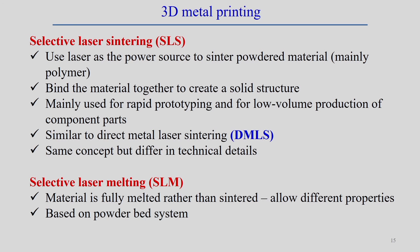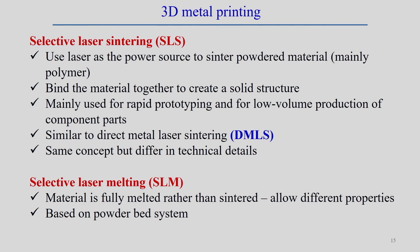Direct metal laser sintering (DMLS) is similar to selective laser sintering but applied to metallic alloys. Both follow the same concept but differ in technical details — one is powder bed based and the other is directed energy based. In selective laser melting, instead of sintering, the material is fully melted rather than just sintered.